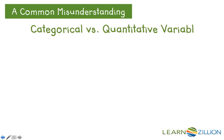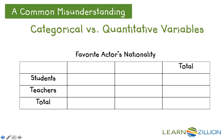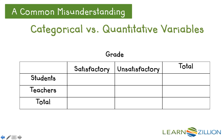Oftentimes, people get confused between categorical and quantitative variables. For example, gender is a categorical variable because there are two outcomes possible. Your favorite actor's nationality is also categorical — for example, the actor could be American or not American. Grades, if classified as categories such as satisfactory or unsatisfactory, could also be considered categorical.